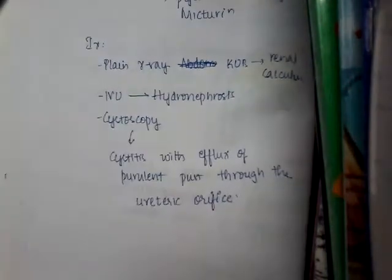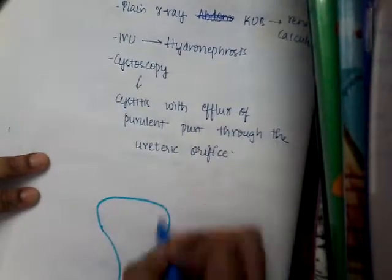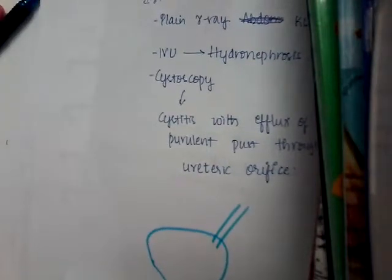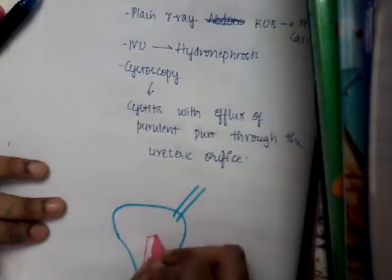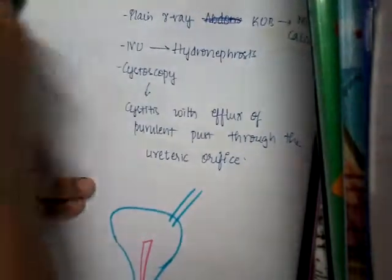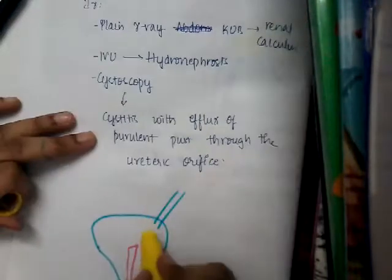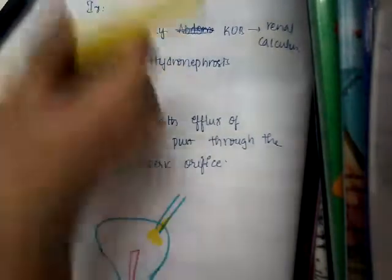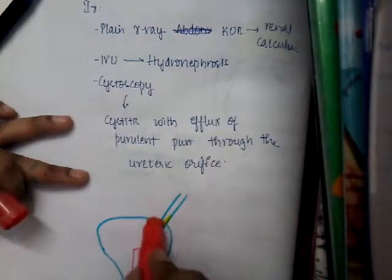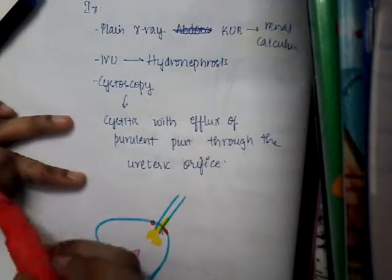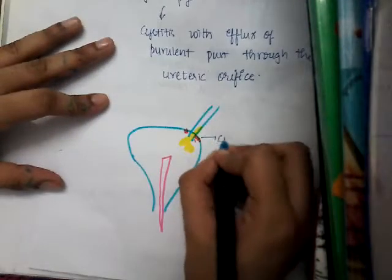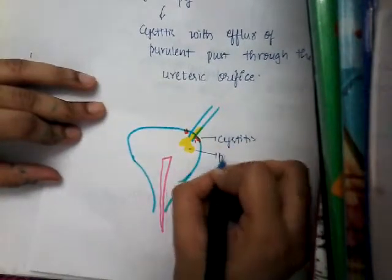So if this is the bladder and this is the ureter, when you pass a cystoscope through it, you will see pus coming out of the ureteric orifice. You will also see inflammation of the bladder wall, which is cystitis. So you see cystitis with pus — this is what is seen on cystoscopy.